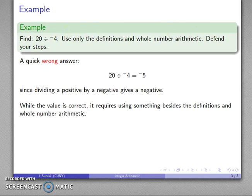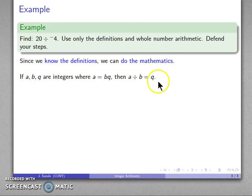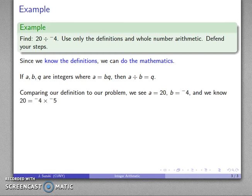Since we know the definitions, we can do mathematics. If a, b, and q are integers where a equals b times q, then a divided by b equals q, and conversely. So I have a division. I pull up my definition of division and I can compare my definition to what I have. So let's see. I'm taking 20 divided by negative 4 and I want to get a quotient.